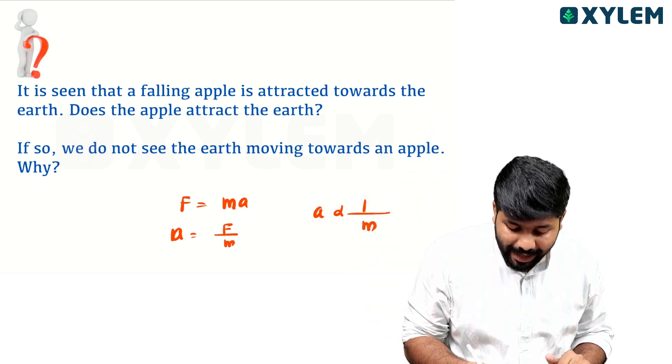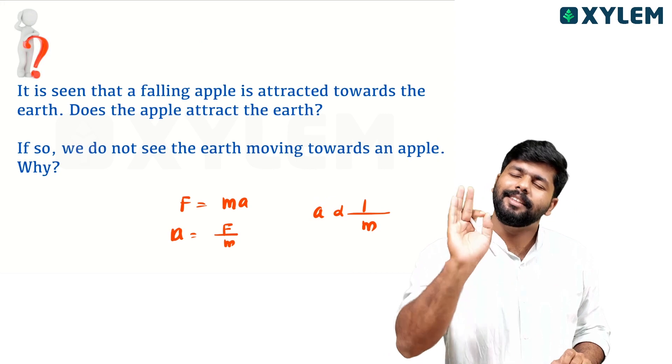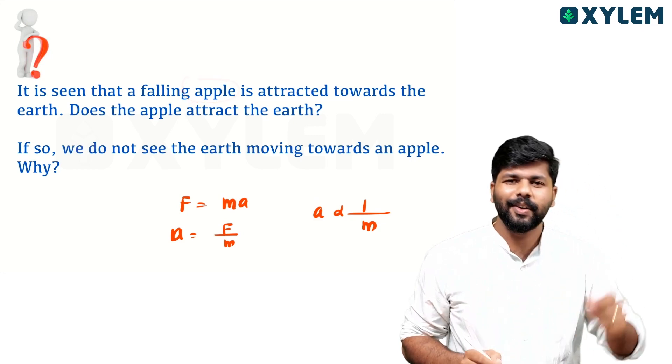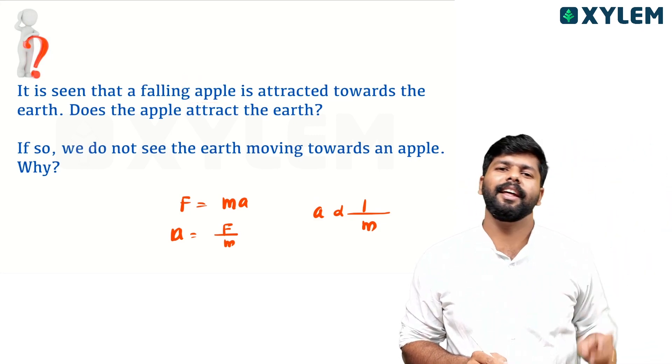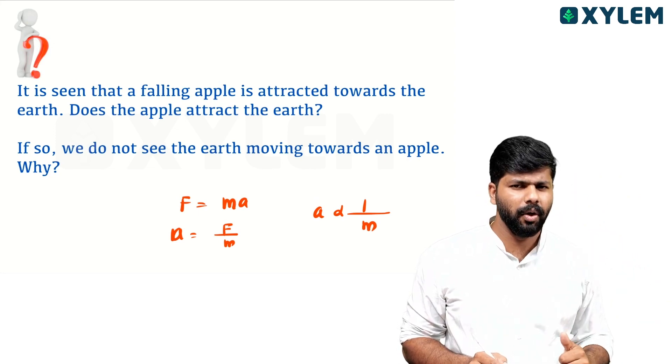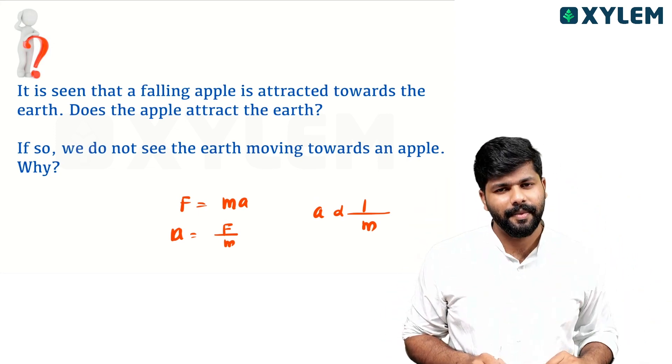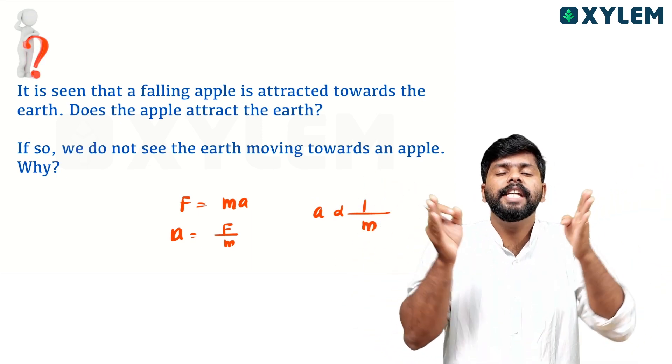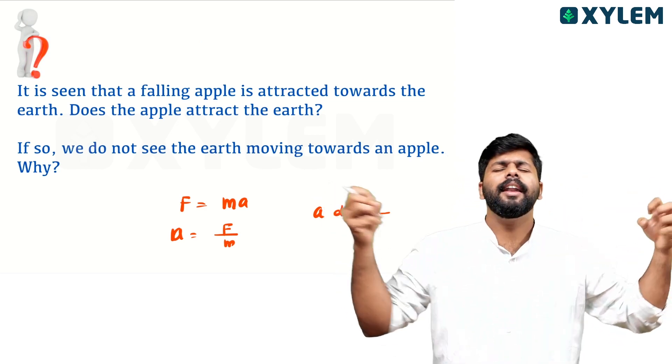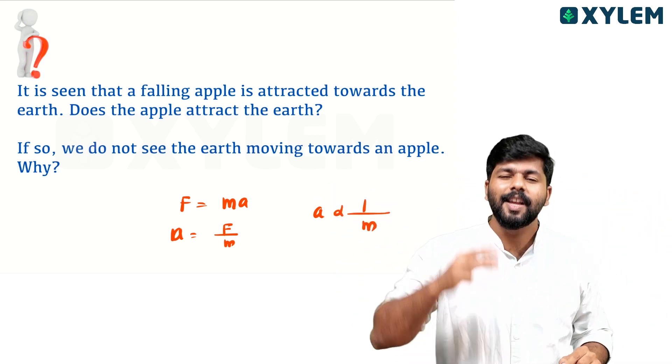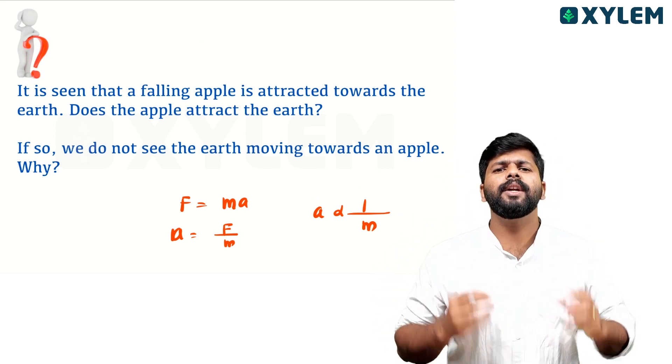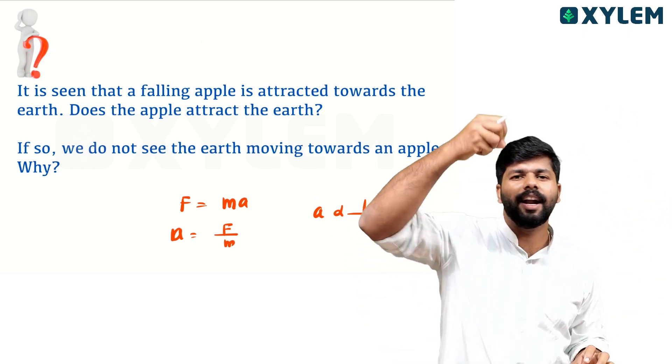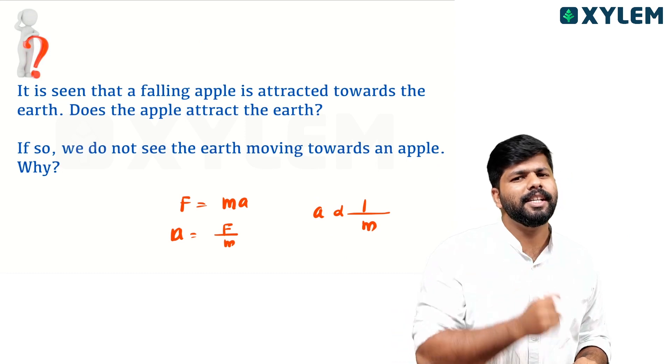Mass of a body is inversely proportional to acceleration. It will accelerate. If we look at two bodies, if they are moving, both bodies will move. Since in this case mass of the apple is very very small compared to mass of Earth, the apple will accelerate towards Earth. That's why the apple is moving. Clear?